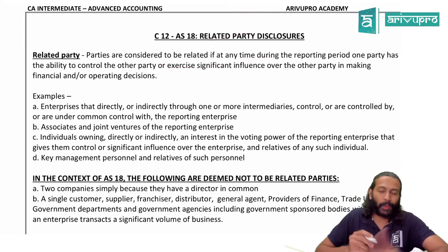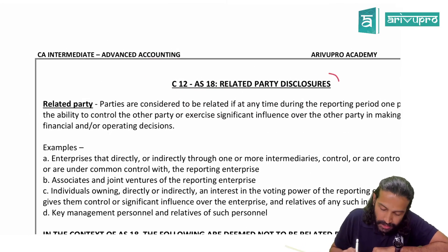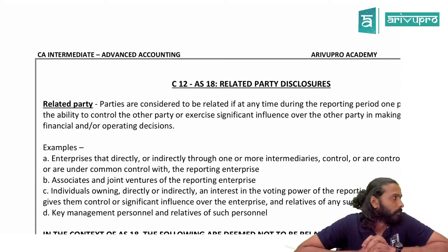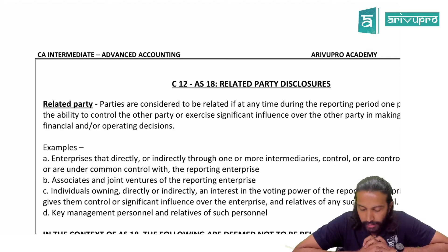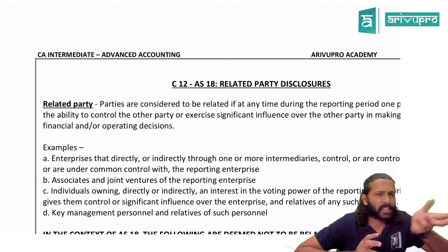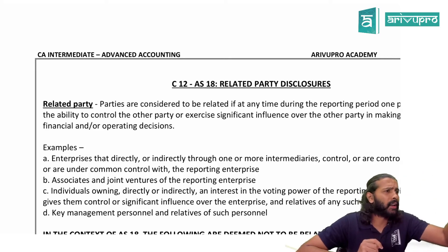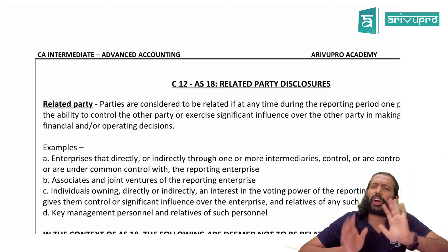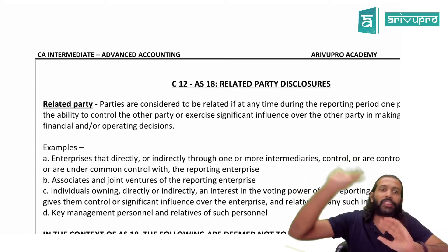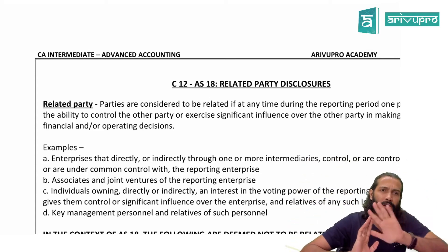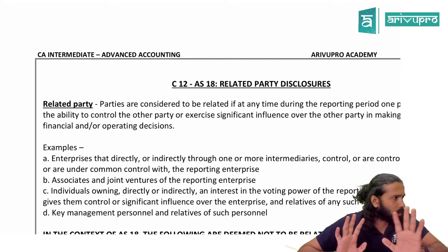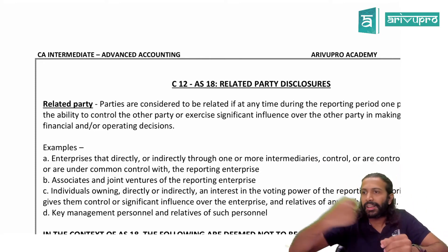Let's get started with a new topic: Accounting Standard 18 - Related Party Disclosure. The standard itself says 'related party disclosure,' which means this is not an accounting, recognition, or measurement standard. This is just a disclosure standard — something has happened, some transaction has happened, and you need to give some additional information about it.